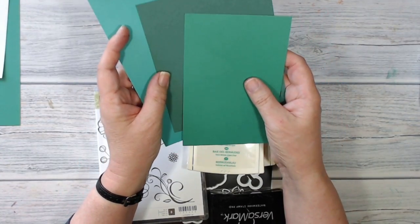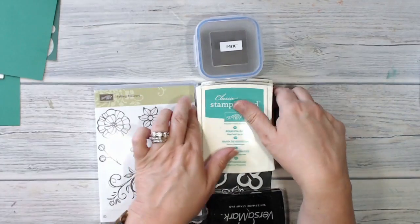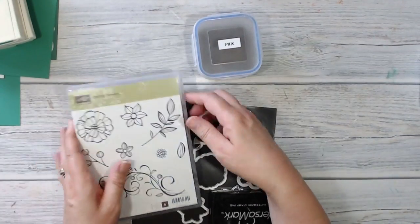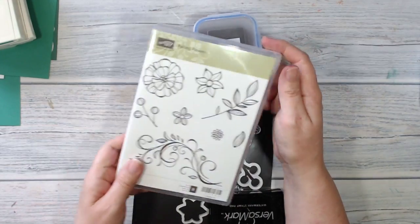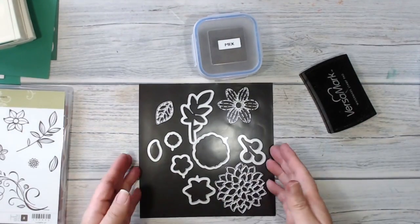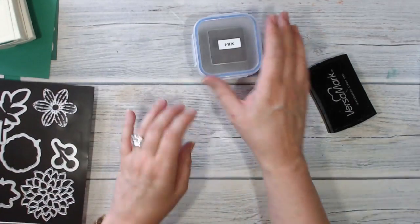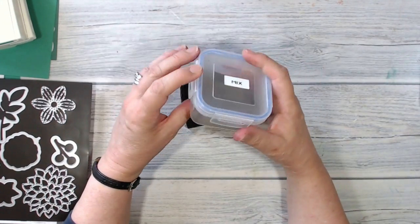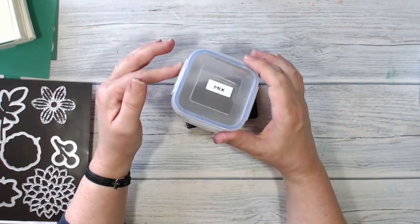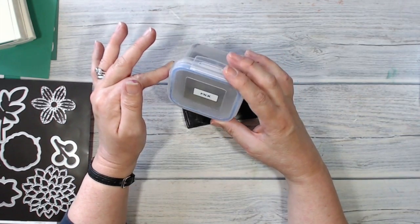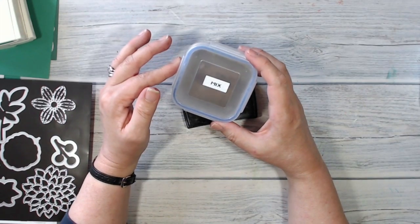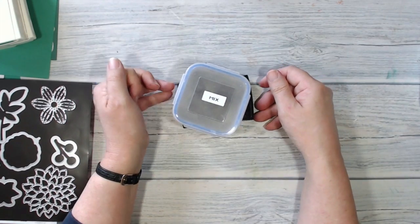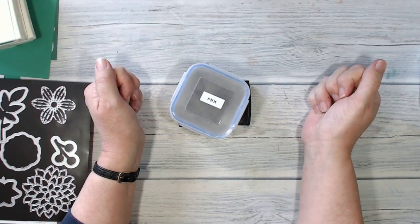I've got some Bermuda Bay, some tranquil tide and some emerald envy, and I've also got inks in those three colors as well. I've got the falling flowers stamps and the may flowers thinlets that go with them. I have Versamark stamping and I've got some embossing powder. Now this is a custom mix embossing powder that I'm calling happy accident because I accidentally tipped some gold embossing powder in with some silver embossing powder, and I'm not going to waste it, I'm going to use it.